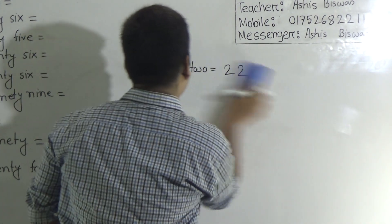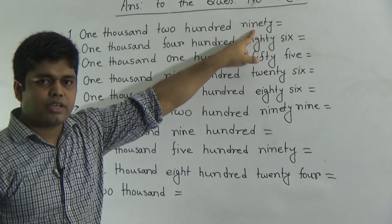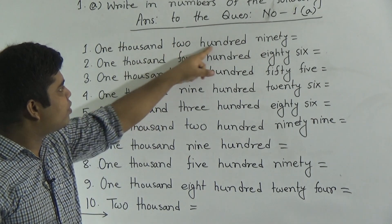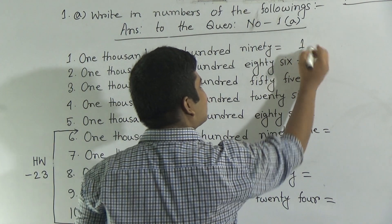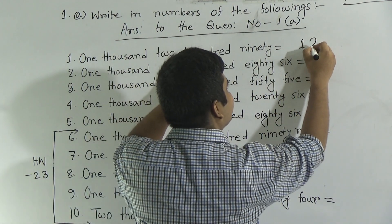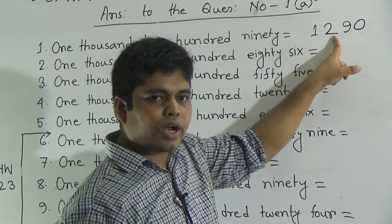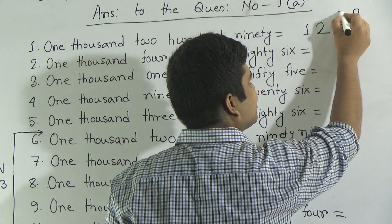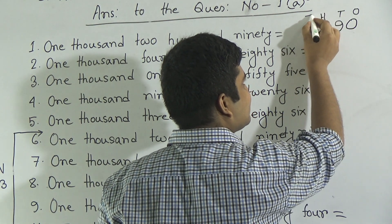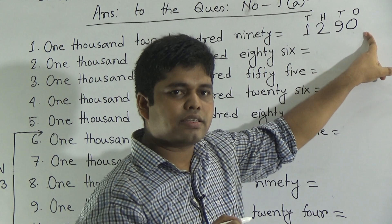Let's go to our today's lecture. First of all: 1290. 90 means 90, and 200 — we have already learned 1000. So first we write 1000, then 200, then 90. Write here 90 — so 1290. You can check this: this is 1's place, this is 10's place, this is 100's place, and this is 1000's place. Notice: 1290. I hope you have understood.